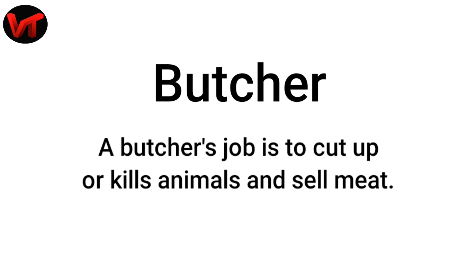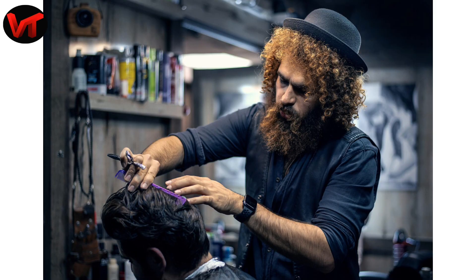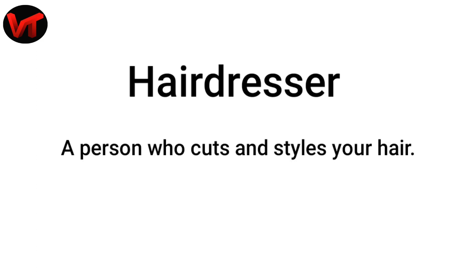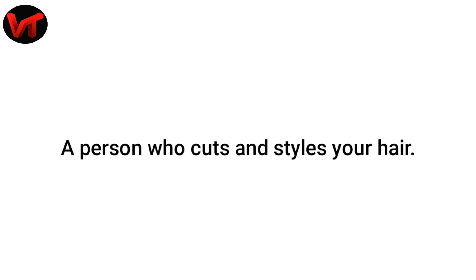He is called a Butcher. A butcher's job is to cut up or kill animals and sell meat. A common term is Hairdresser — a person who cuts or styles your hair. A Barber is someone who cuts men's hair.